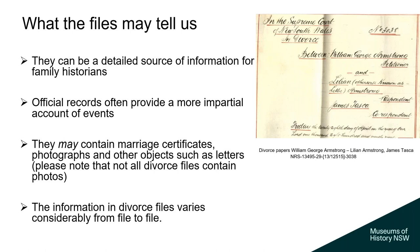The files can be a wonderful source of information for family historians. As they are official records, they often provide a more impartial account of events and may provide answers to questions you have about your ancestors — clearing up issues you've been debating and revealing whether information you had was correct or has been skewed over time. There may also be marriage certificates, photos, or letters in the files, though not all files contain photos.